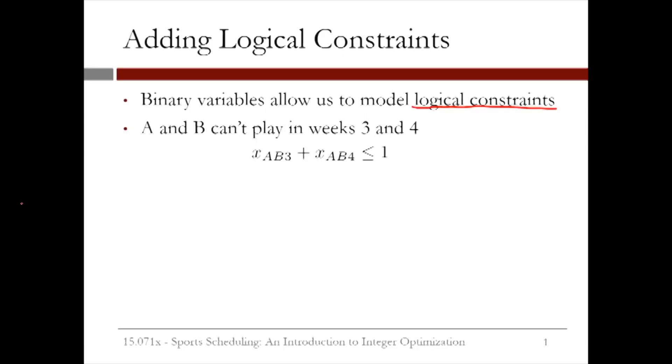Suppose we want to add the constraint that A and B can't play in both weeks 3 and 4. We can do this by adding the constraint xAB3 plus xAB4 less than or equal to 1. What are feasible values for these two variables given this constraint?